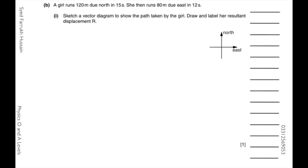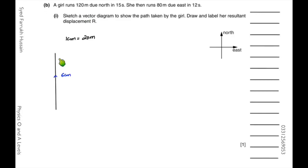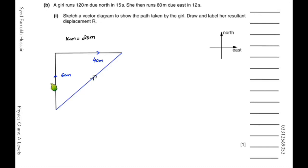A girl runs 120 meters due north in 15 seconds, then 80 meters due east in 12 seconds. You have to draw a vector triangle and label the resultant displacement R. Using a scale of 1 cm = 20 m, I draw 6 cm due north, then 4 cm due east from the head of the first vector. The resultant is from the tail of the first to the head of the second. Vectors to be added are clockwise, so the resultant is anticlockwise, labeled R.